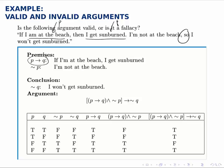The second premise is I'm not at the beach, not P. The conclusion is I won't get sunburned, not Q. Full argument therefore is P implies Q and not P, therefore not Q.